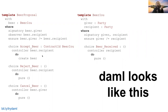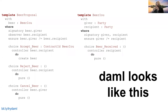We create our first template with our signatory - the giver, the person offering it - and the observer, the person receiving it. Then we have a set of choices where the recipient can choose to accept this offer or reject it. We also have the option where the giver can cancel the proposal. One nice property of DAML is that when you execute a choice on a contract, it's atomic and it archives that proposal after the choice is executed, so you can't end up with conflicting simultaneous actions.